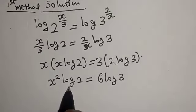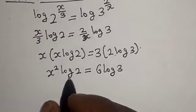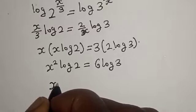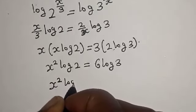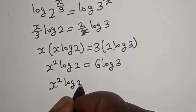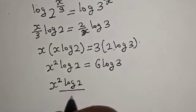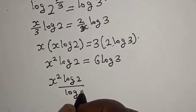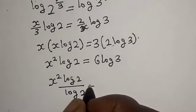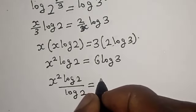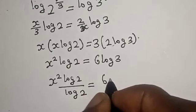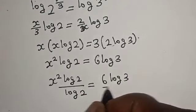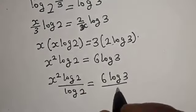Now we are looking for the value of x. Let's divide both sides by log 2. x squared log 2 divided by log 2 is equal to 6 log 3 divided by log 2.